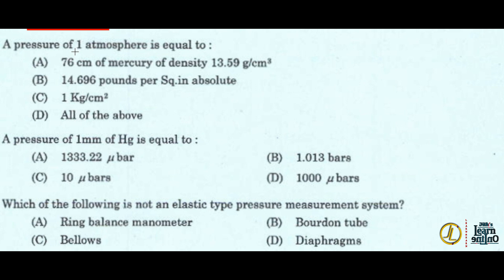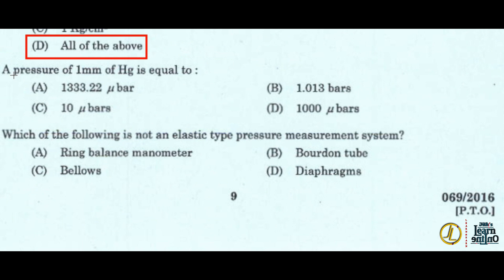A pressure of 1 atmosphere is equal to option A. A pressure of 1 millimeter of Hg is equal to option A, 1333.22 micrometer.